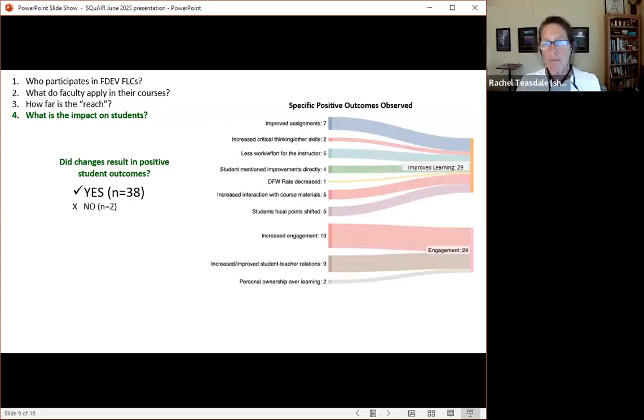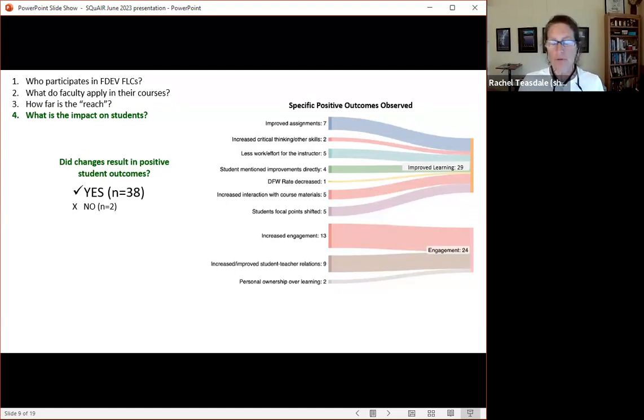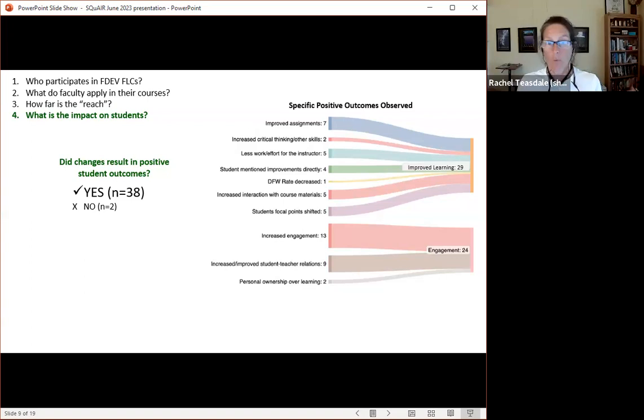Some of the specific positive outcomes you can see on the left of this Sankey chart. They're changing their assignments, reducing their DFW rates. And all of that is contributing to a category of improved learning that they're observing. Other positive outcomes that they report for their students are in the category of engagement. We see faculty who came in - another question was why did you take this FLC? And the two main things were to increase student learning and increase engagement. So we see both of those as categories of the positive outcomes that they observed.